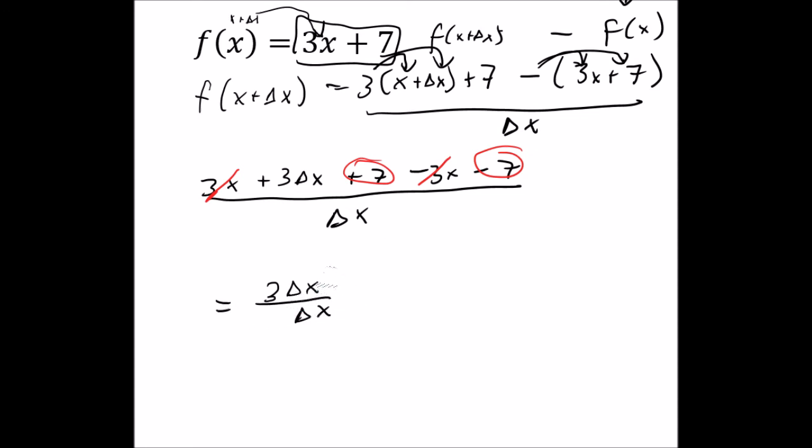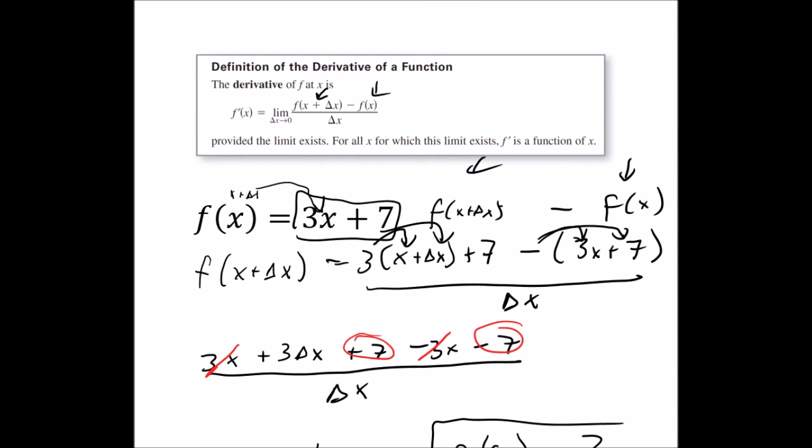And when we cancel out the change of x's, the derivative of this just equals 3. So we found the derivative of the function. And if you look at that using other methods of taking the derivative, which we'll have videos for later on, the derivative of 3x plus 7 is just 3.